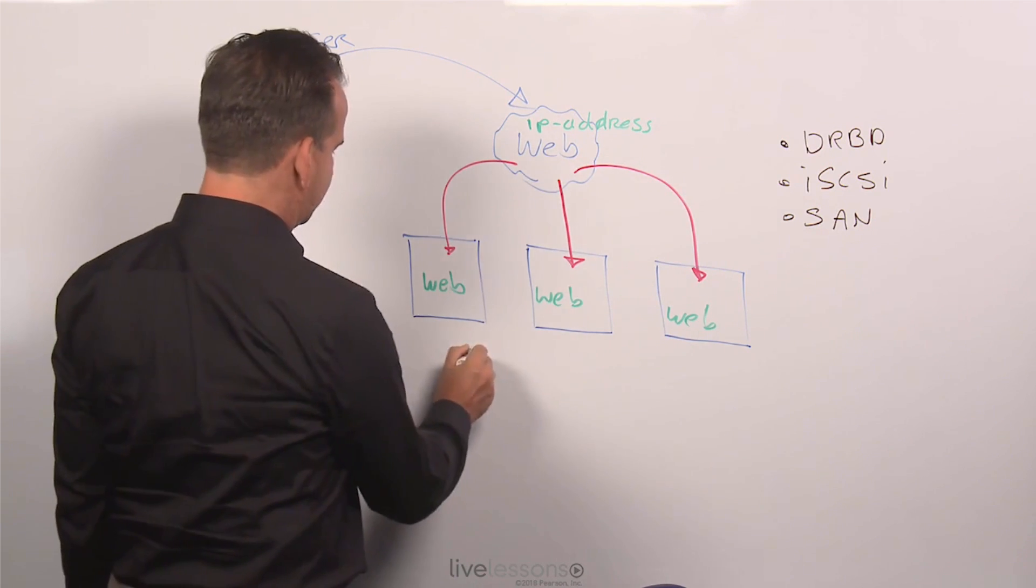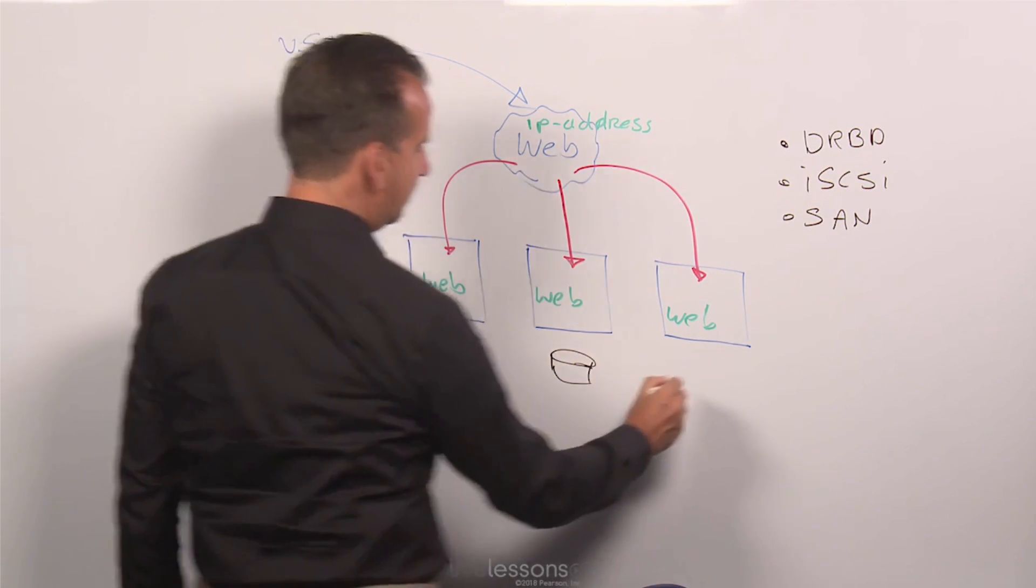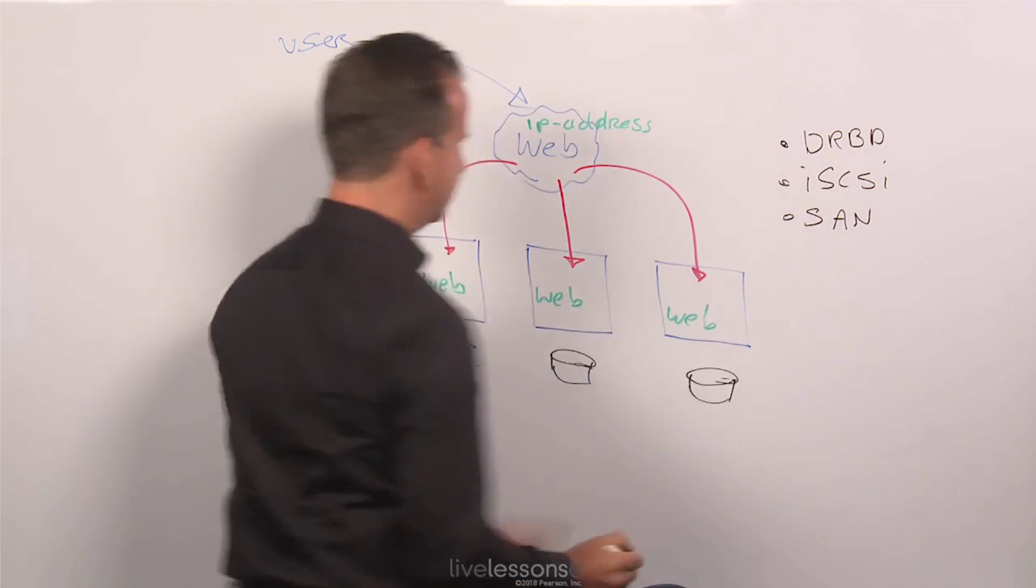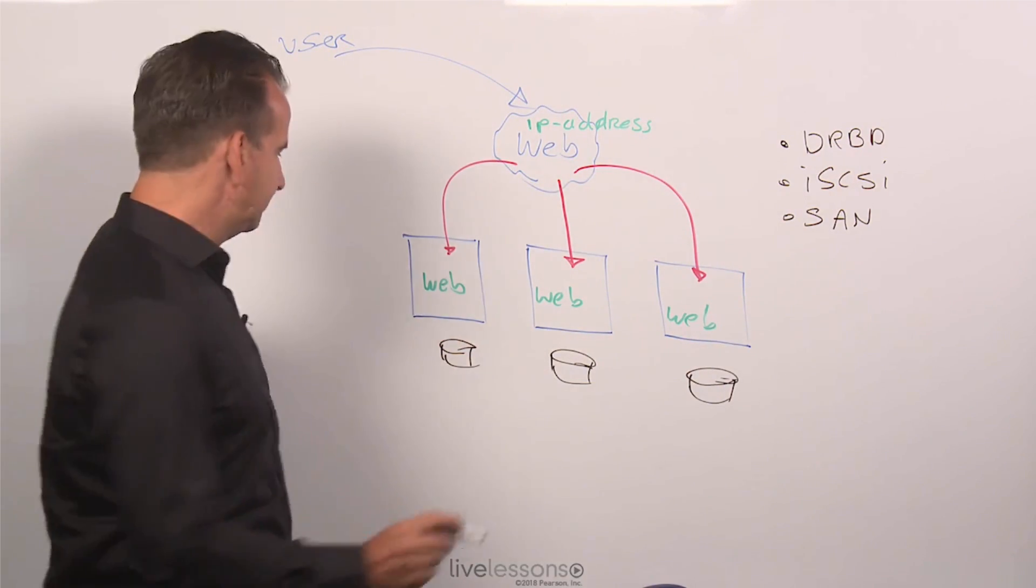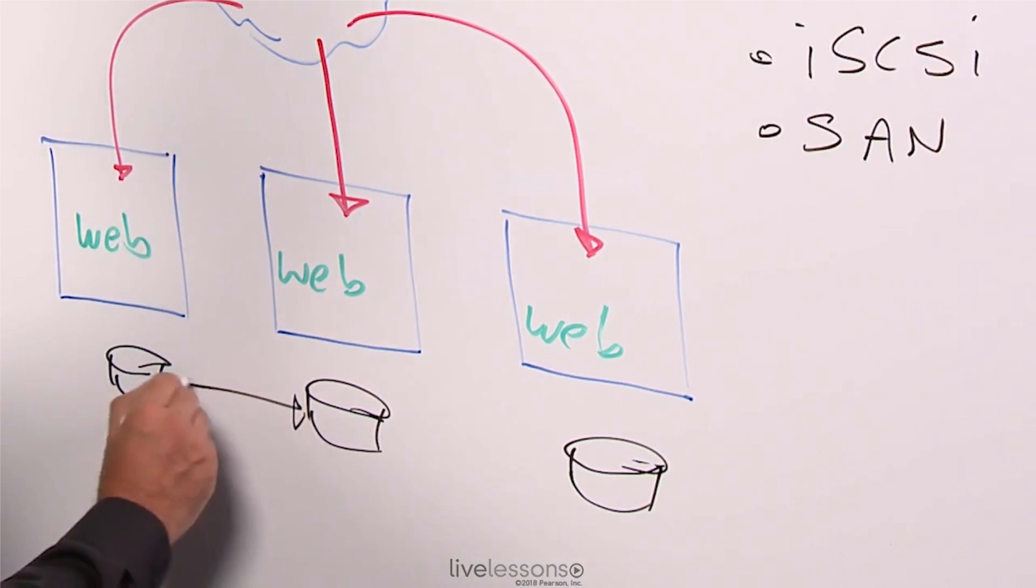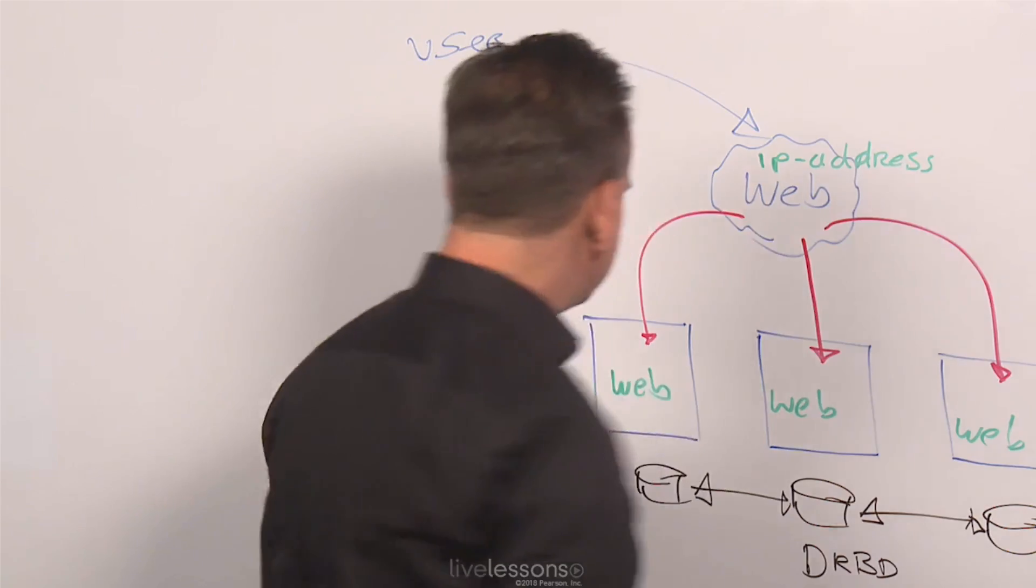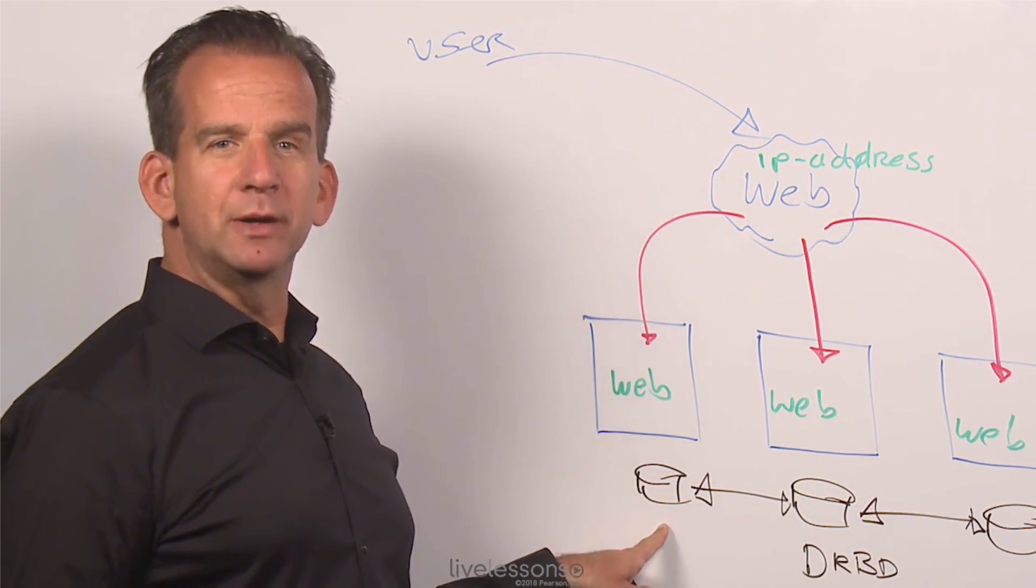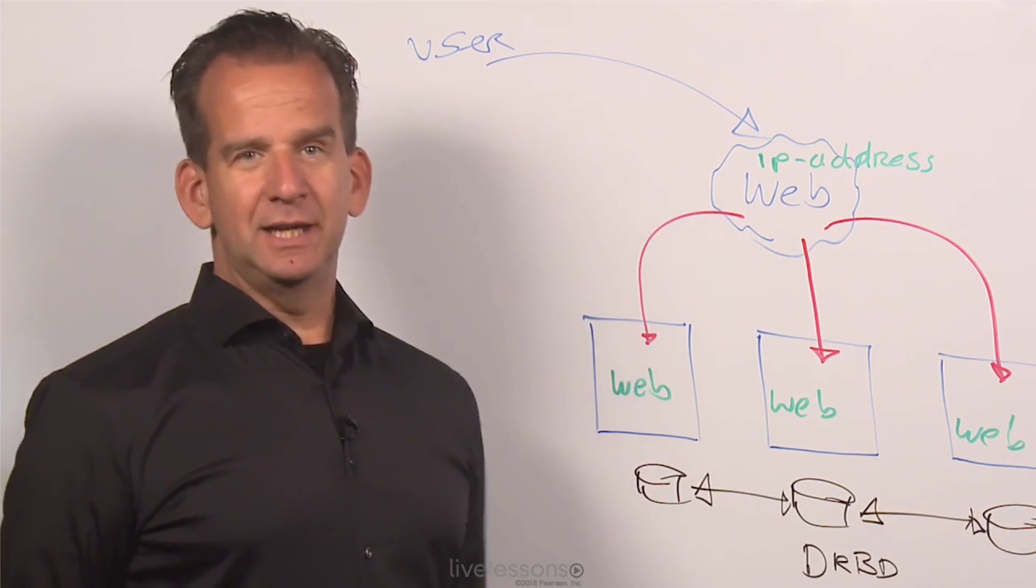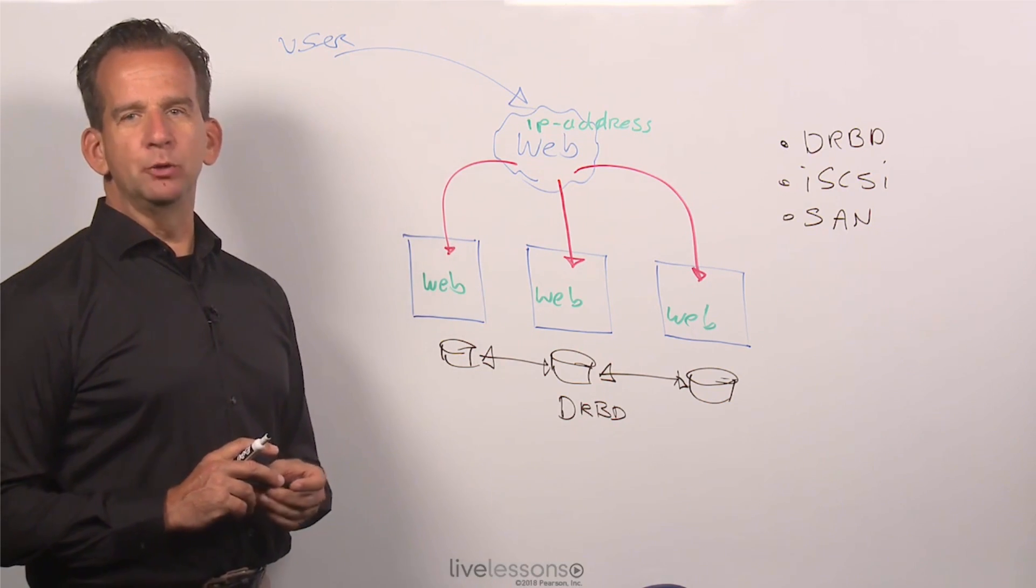DRBD is a distributed replicated block device. So the idea in DRBD is that every server will have a hard drive. Imagine this, a hard drive. So this hard drive is locally visible to every server, and in DRBD you are going to set up block level synchronization between the different hard drives. And that means that at the moment that something is written here, block level synchronization will occur and it will be replicated here, and it will be replicated here as well.